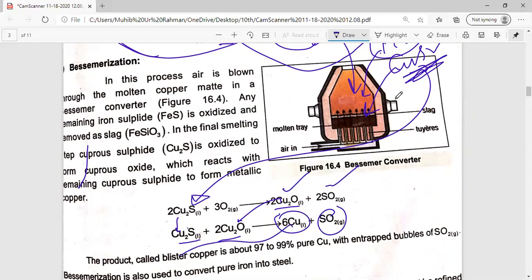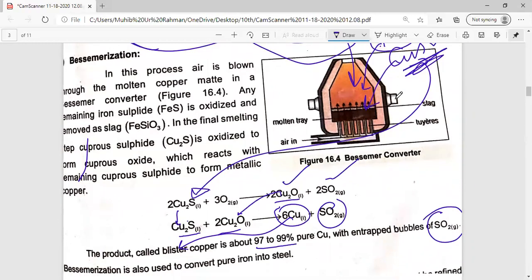We call this blister copper, 97-99% pure copper. We call this blister because bubbles of sulfur dioxide are captured, entrapped.